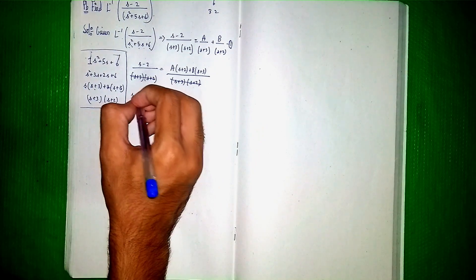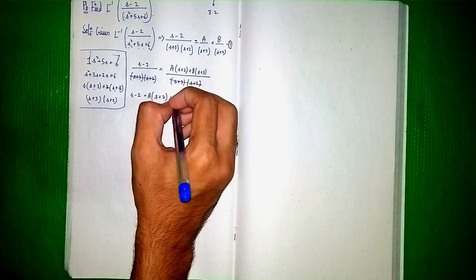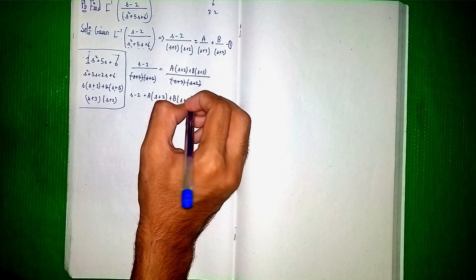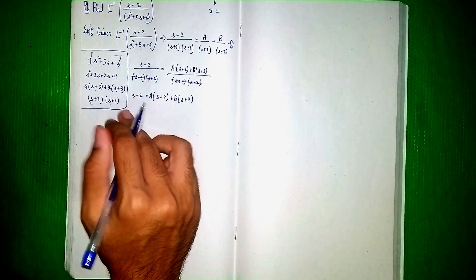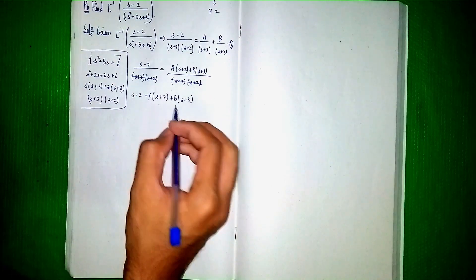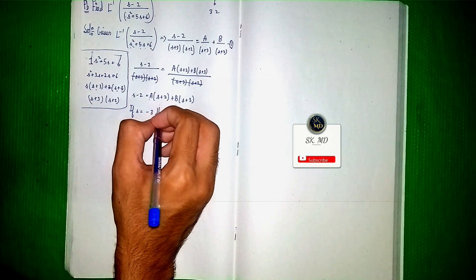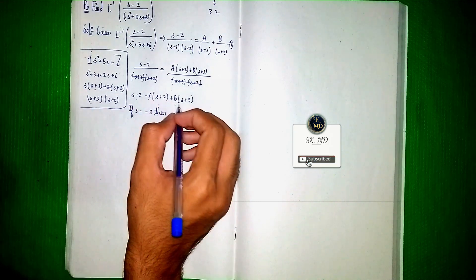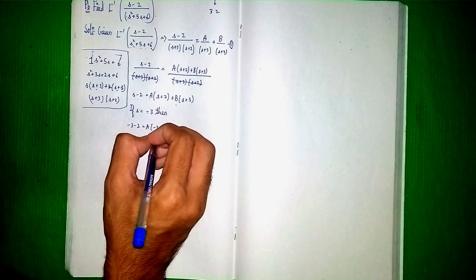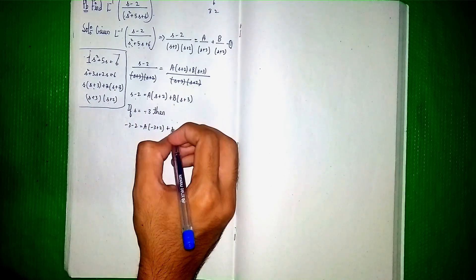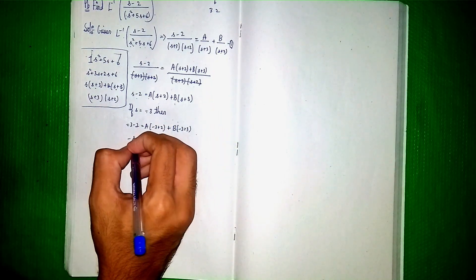The denominators cancel, so we have: s minus 2 equals A(s plus 2) plus B(s plus 3). Now we find the values of A and B by substituting values to eliminate one variable at a time. If s equals minus 3, substituting: minus 3 minus 2 equals A(minus 3 plus 2) plus B(minus 3 plus 3).